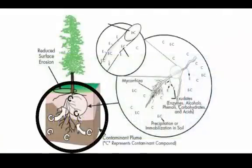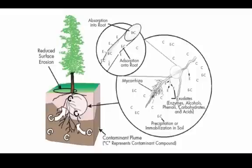Phytostabilization occurs in the root zone. Plant roots entrap and absorb or adsorb contaminants to reduce their migration. This prevents water erosion, leaching and soil dispersion of pollutants.